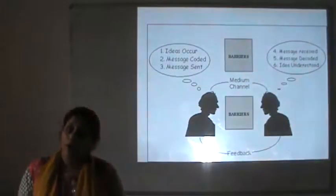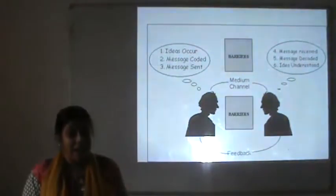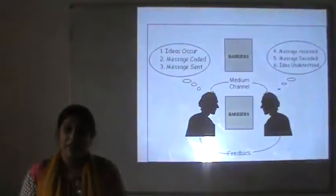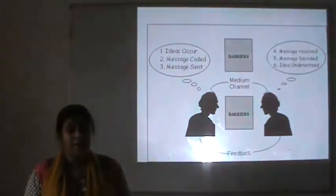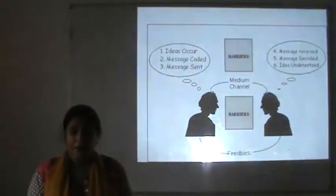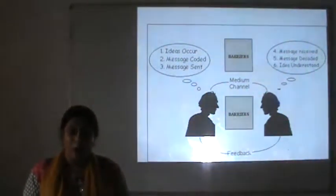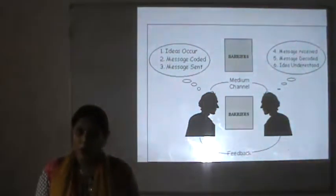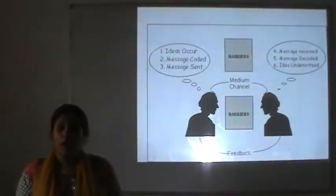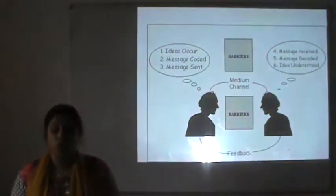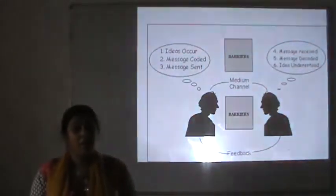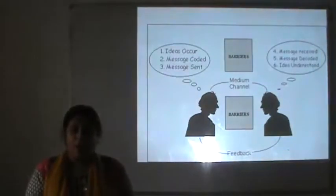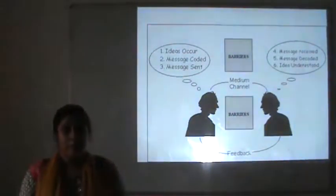It may often occur that what the sender had intended to communicate to the receiver is not communicated in that manner. The sender feels that the reply to the message is not what was expected. What happened that we do not get the expected response? That hindrance or thing that obstructs us from communicating clearly is said to be the barrier to the process of communication.